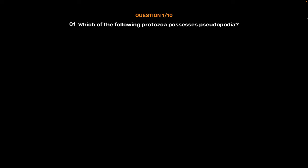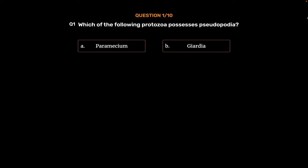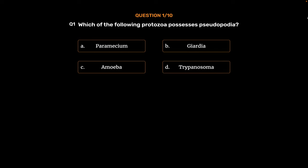Question No. 1: Which of the following protozoa possesses Pseudopodia? Option A: Paramecium. Option B: Giardia. Option C: Amoeba. Option D: Trypanosoma. The correct answer is Option C, Amoeba.